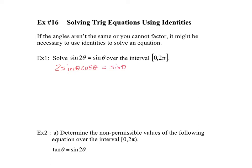Now what I can do is bring this to the other side and make it equal to 0 on one side. So you have 2 sine theta cos theta minus sine theta equals 0. And now in this situation, we can factor the common factor of sine and we're going to get an equation we can solve. So sine theta times (2 cos theta minus 1) equals 0.